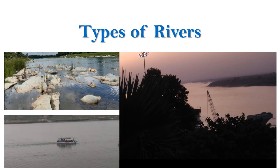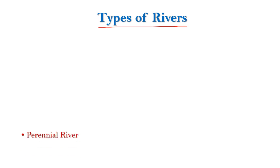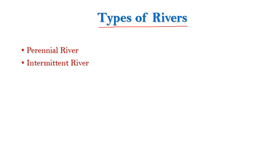Hello everyone, welcome back to my channel. I hope you all are fine. Today I will be discussing the topic: types of rivers. There are three types of rivers on the basis of annual hydrograph. The first one is perennial river, the next one is intermittent river,